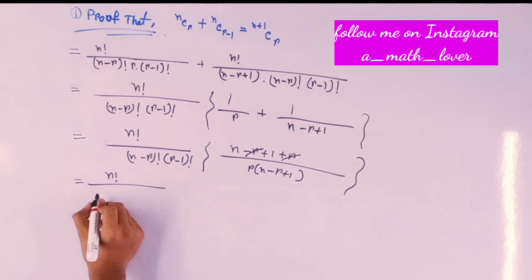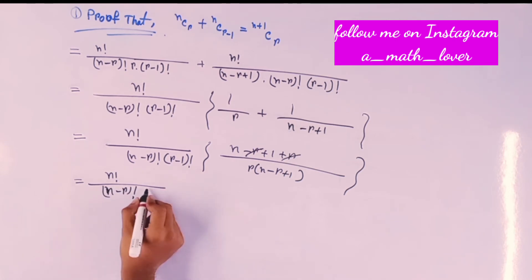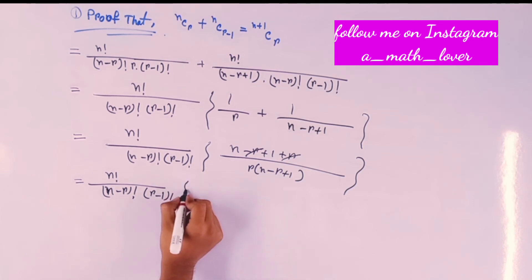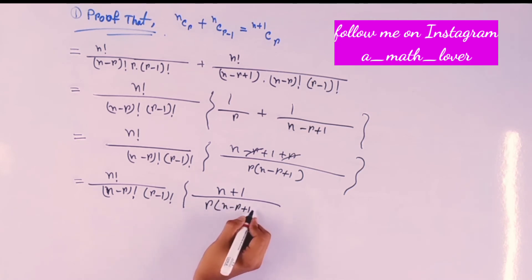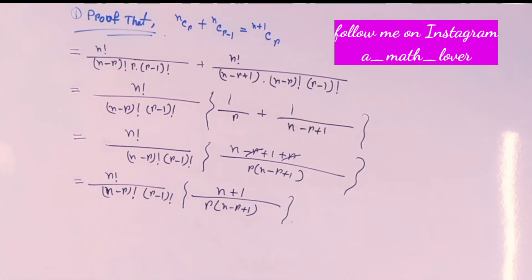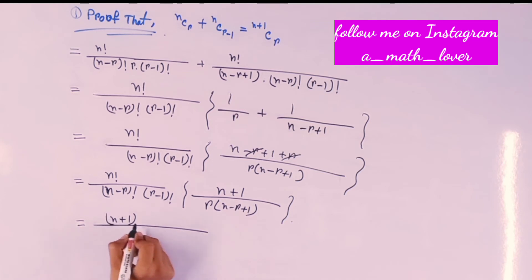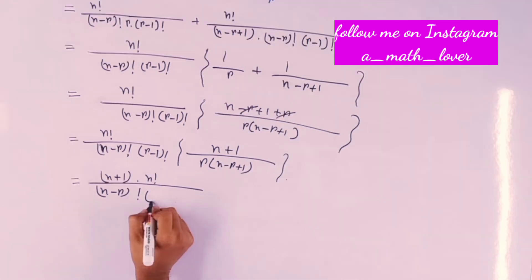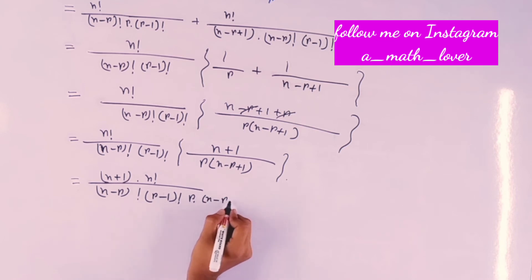The numerator r and minus r cancel out, so that equals to n factorial by (n minus r) factorial times (r minus 1) factorial times (n plus 1) over r times (n minus r plus 1). This gives n plus 1 times n factorial by (n minus r) factorial times (r minus 1) factorial times r times (n minus r plus 1).